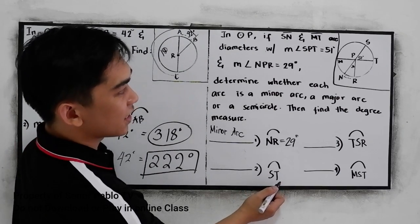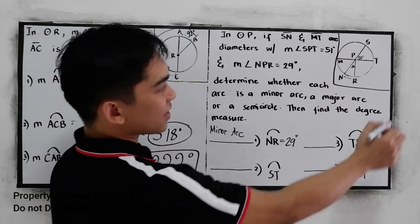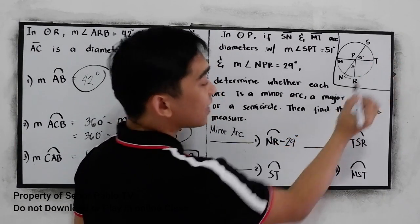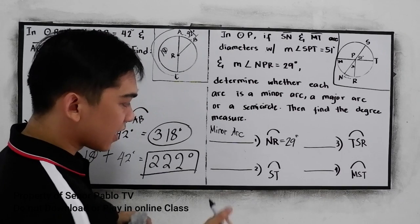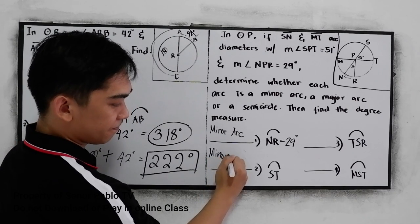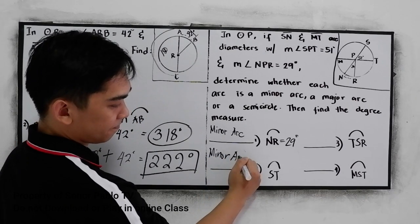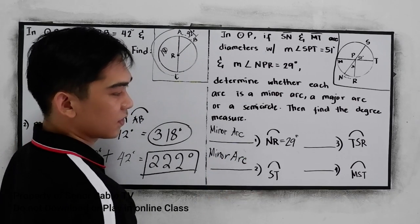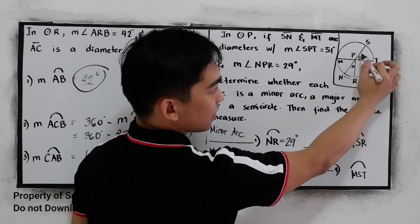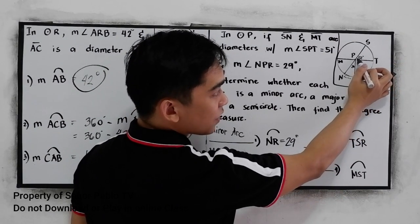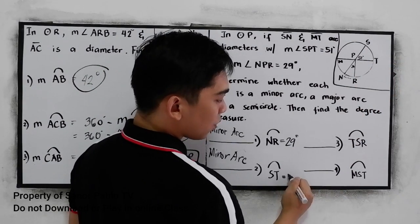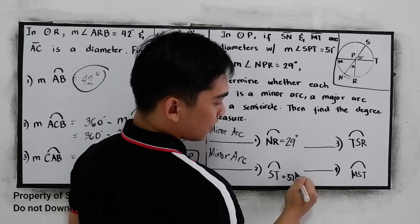Next, arc ST — this is still a minor arc. The measure of arc ST equals the measure of the central angle, which is 51 degrees.